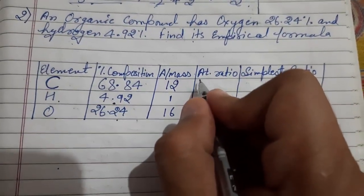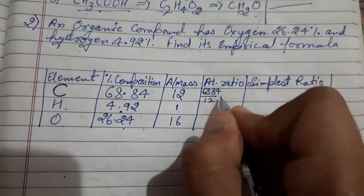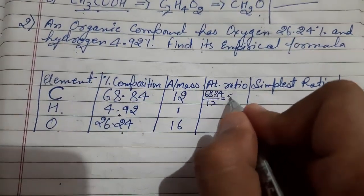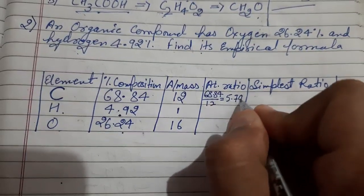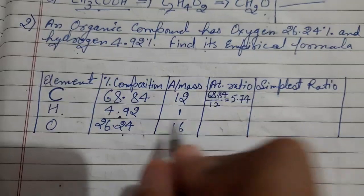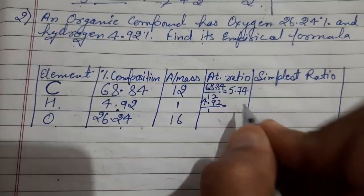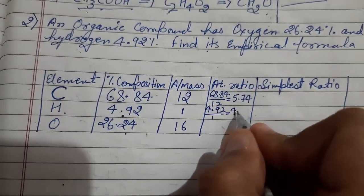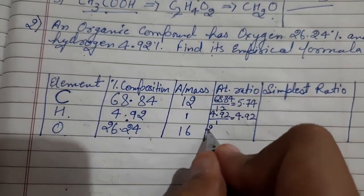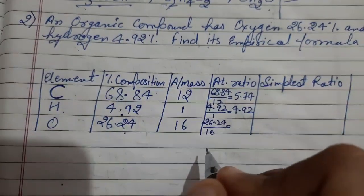Now how to calculate atomic ratio? Simple - you have to divide percentage composition by the atomic mass. In this first case we will be dividing 68.84 divided by 12 and you are going to get 5.74. In next case, 4.92 divided by 1, so obviously same number is going to come, 4.92. In next case, 26.24, you have to divide it with the atomic mass and the number is going to come 1.64.